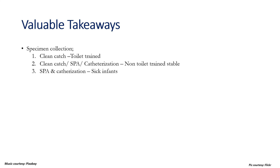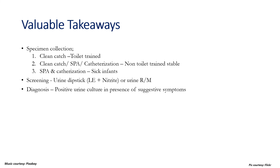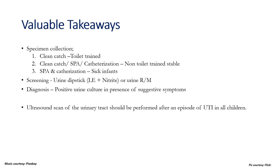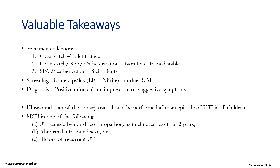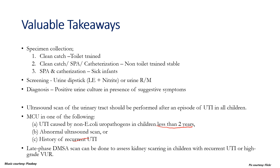Key takeaways: Specimen collection — clean catch method in toilet trained children; clean catch, suprapubic aspiration, or catheterization in non-toilet trained but stable children; and suprapubic aspiration or catheterization in children who are sick. Screening is done by urine dipstick for leukocyte esterase and nitrite, or urine routine microscopy for bacteria and leukocyte urea. Diagnosis is based on positive urine culture in the presence of suggestive symptoms. Ultrasound scan should be performed after an episode of UTI in all children. MCU should be done for UTI caused by non-E. coli uropathogens in children less than 2 years, any abnormal ultrasound scan, or a history of recurrent UTI. Late phase DMSA is done to look for renal scarring in children with recurrent UTI or high grade VUR.